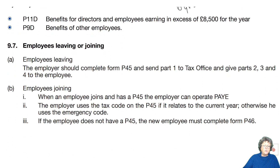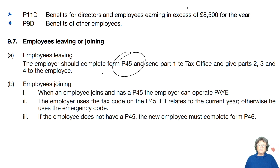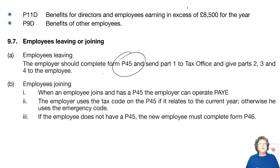When you leave a job, you get a P45. Part one goes to the tax office. Parts two, three, and four go to the employee, who then carries it with them and takes it to their next job. If you're joining a new employer, you need to bring your P45 with you, because that helps them with operating pay-as-you-earn.